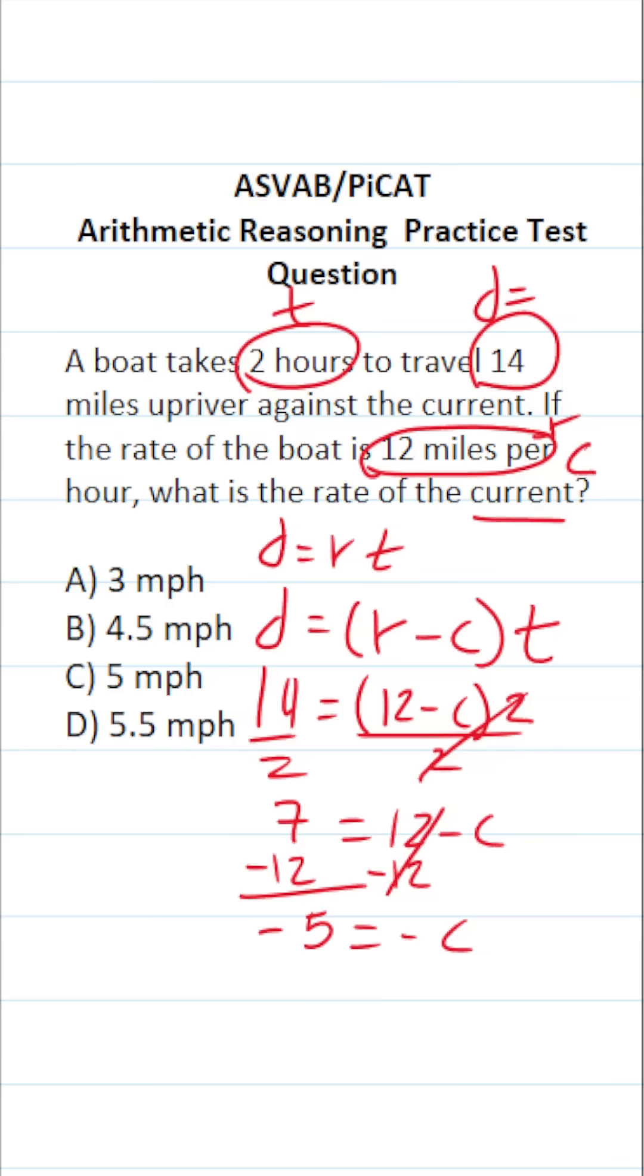And we want to solve this for C, not negative C. So the next thing I'm going to do is divide both sides by negative one. This crosses out here, leaving me with C over here. A negative divided by a negative is a positive. So negative five divided by negative one is simply positive five. In other words, the rate of the current is five miles per hour.